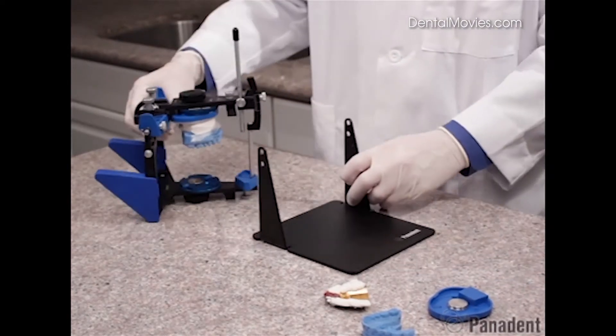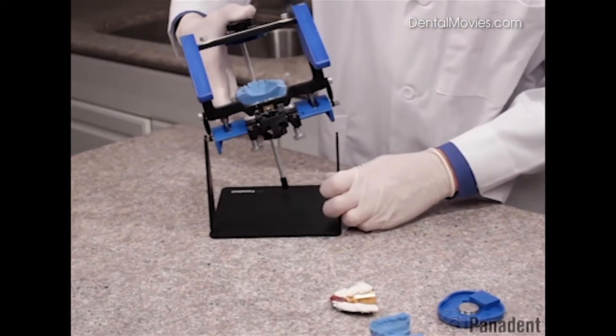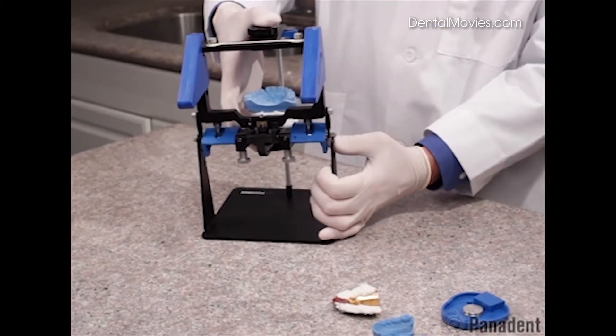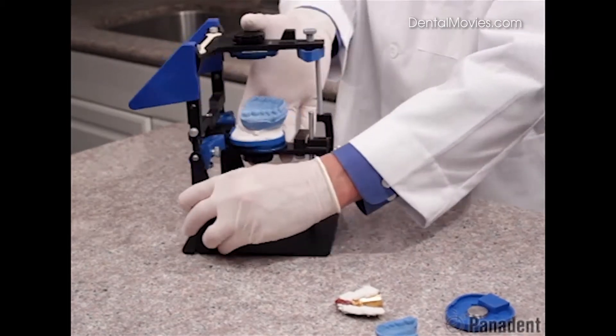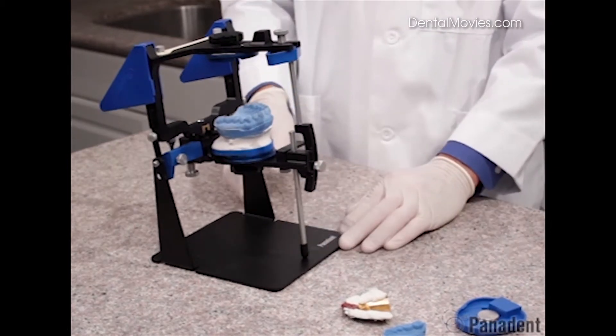Now we have our mandibular mounting stand where we can hold the articulator upside down and then put one pin into the mandibular stand and then spring the mandibular stand out over the other pin. We can then adjust the support pin here to level the articulator into the mandibular stand.